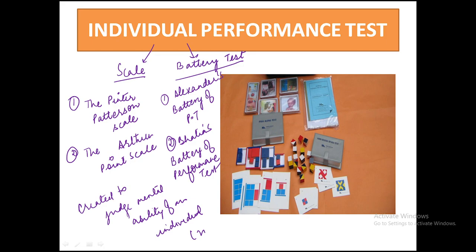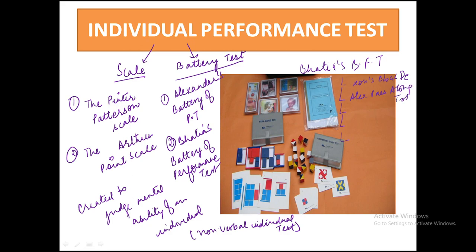Bhatia's Battery of Performance Test has five components. First is the Koh's Block Design. Second is the Alexander Pass-Along Test. Third is the Pattern Drawing Test. Fourth is the Memory Test. Fifth is the Picture Construction Test. The first two — Koh's Block Design and Alexander Pass-Along Test — have been borrowed from foreign researchers, while the last three — Pattern Drawing Test, Memory Test, and Picture Construction Test — were constructed by Mr. Bhatia himself.